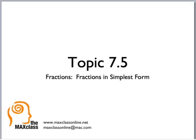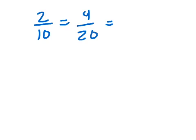Alright, for topic 7.5 we are going to be putting fractions in simplest form. Sometimes you get fractions that look totally different, but they are equal. For example, like 2 tenths, that could be also equal to 4 twentieths, and we could also have that equal to 1 fifth.